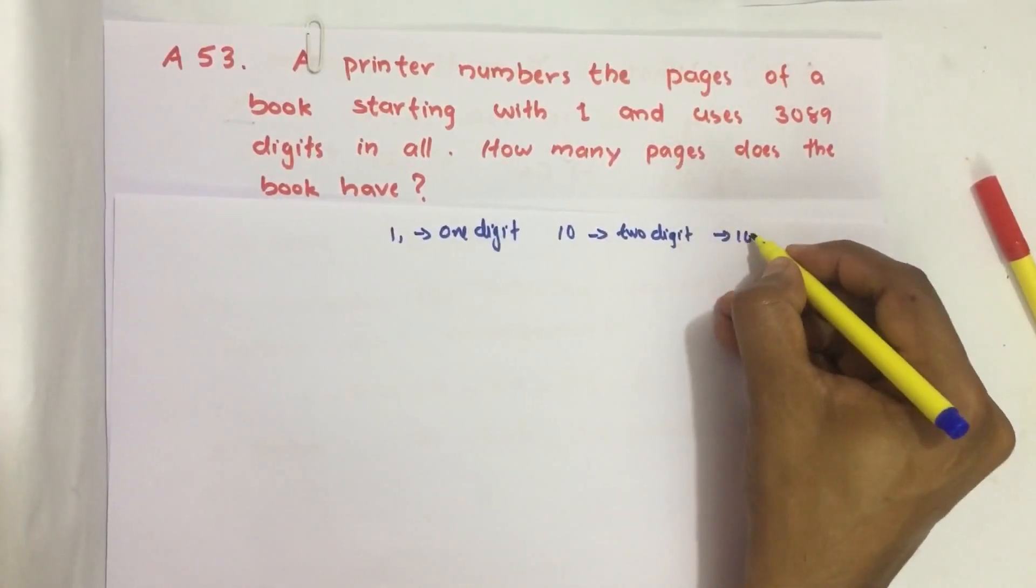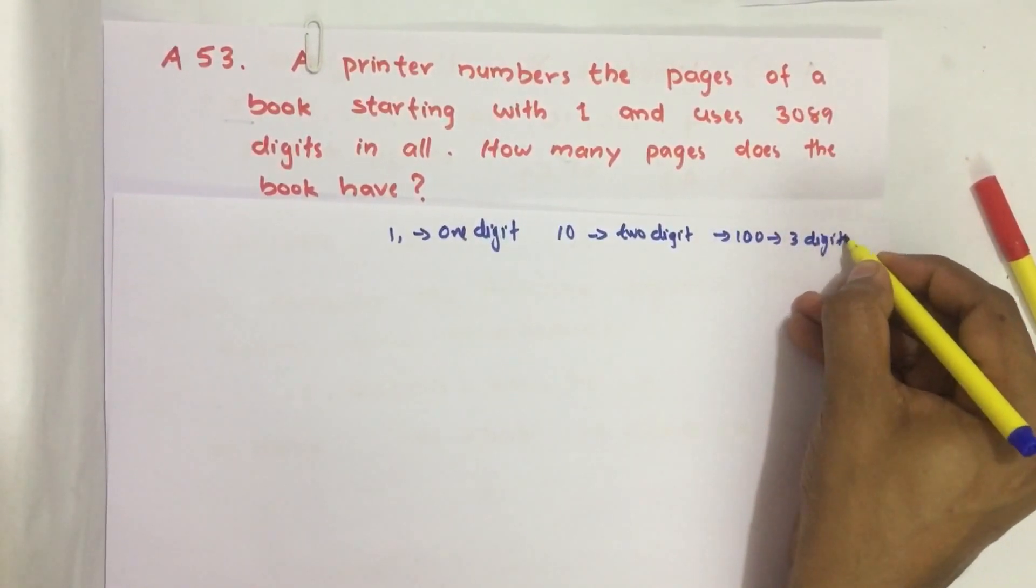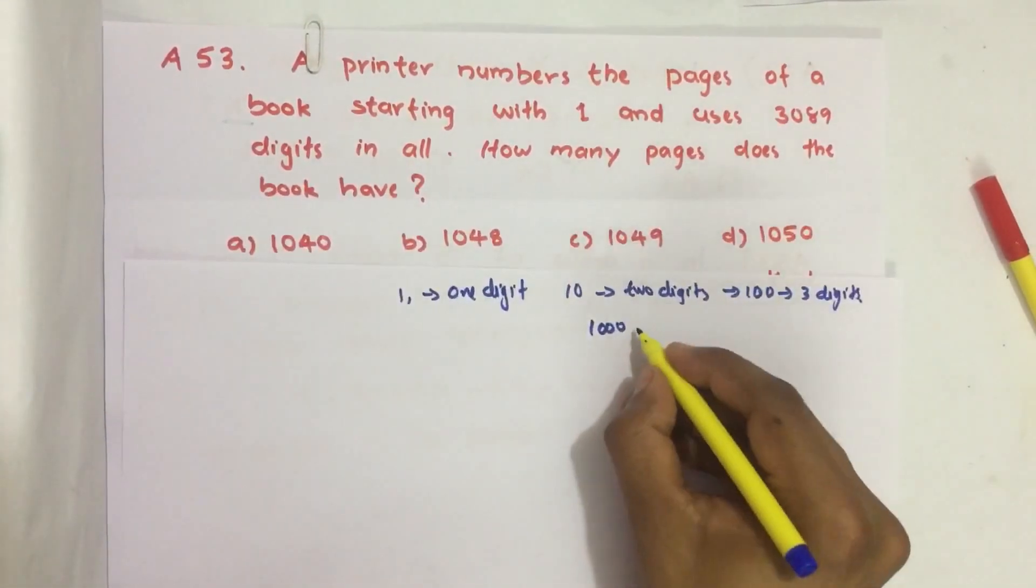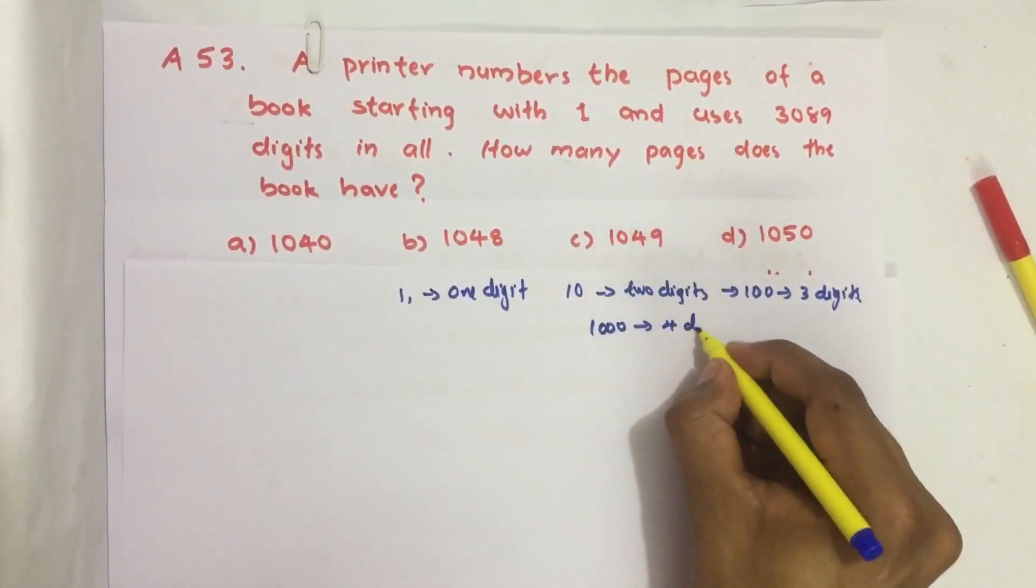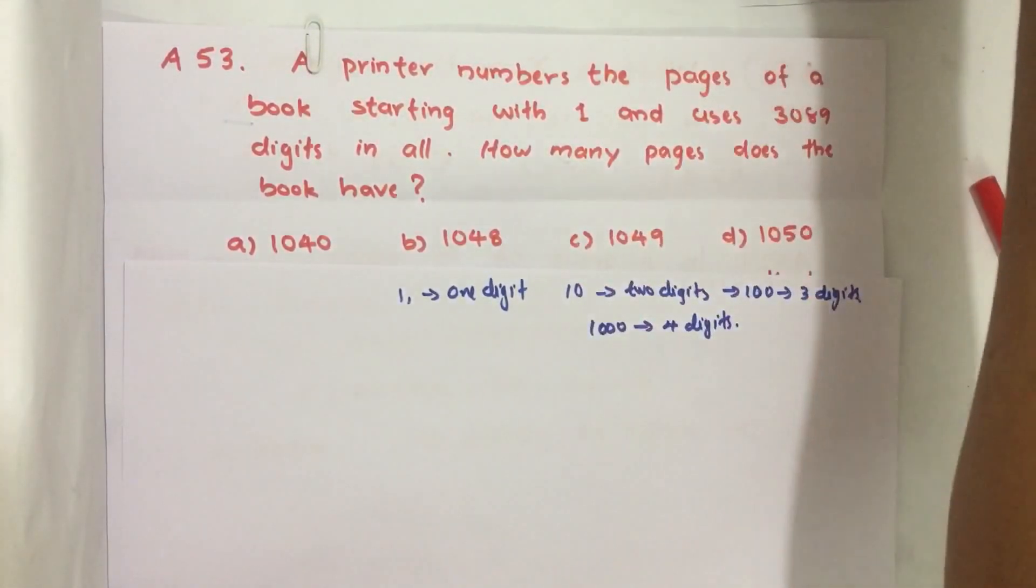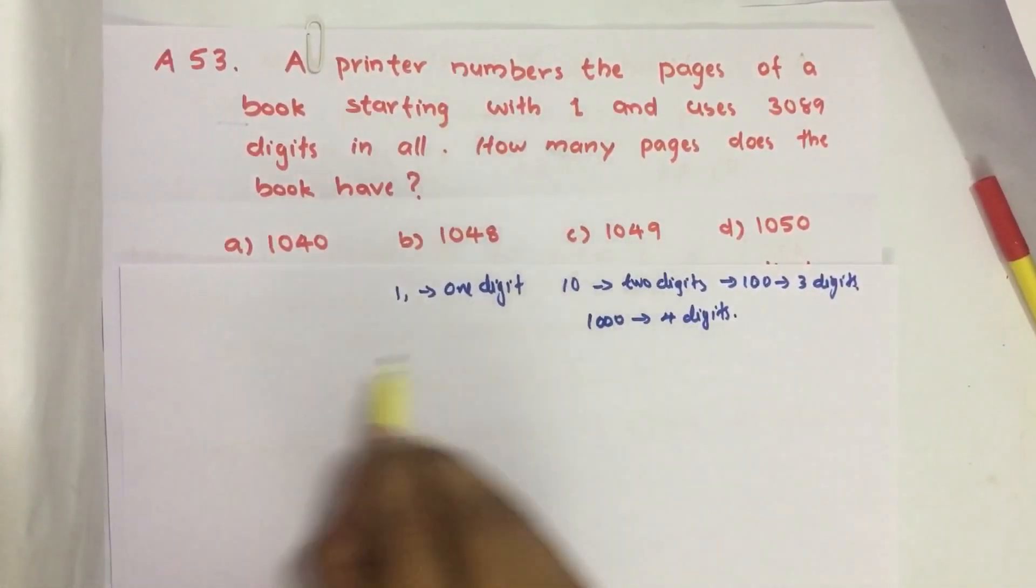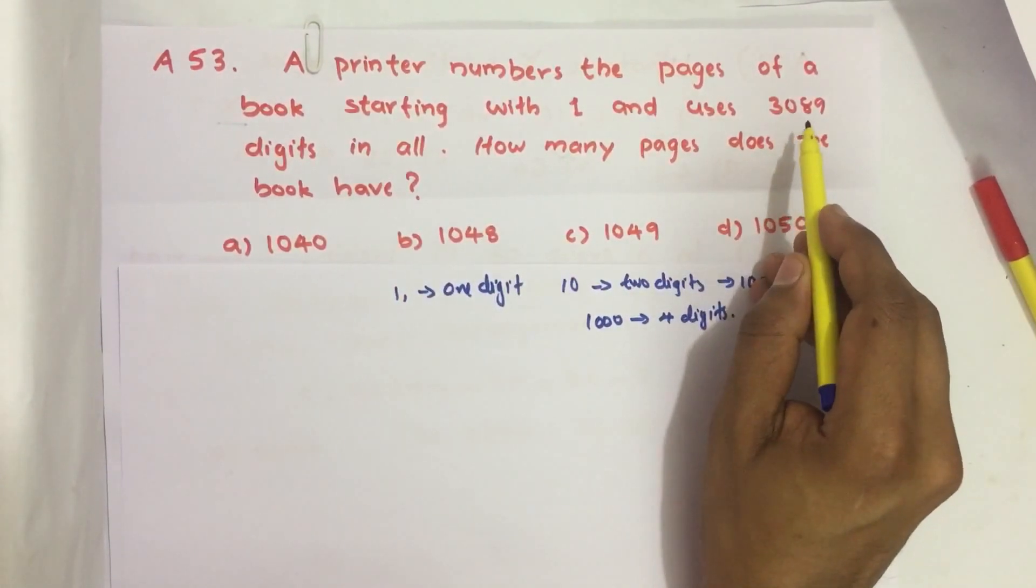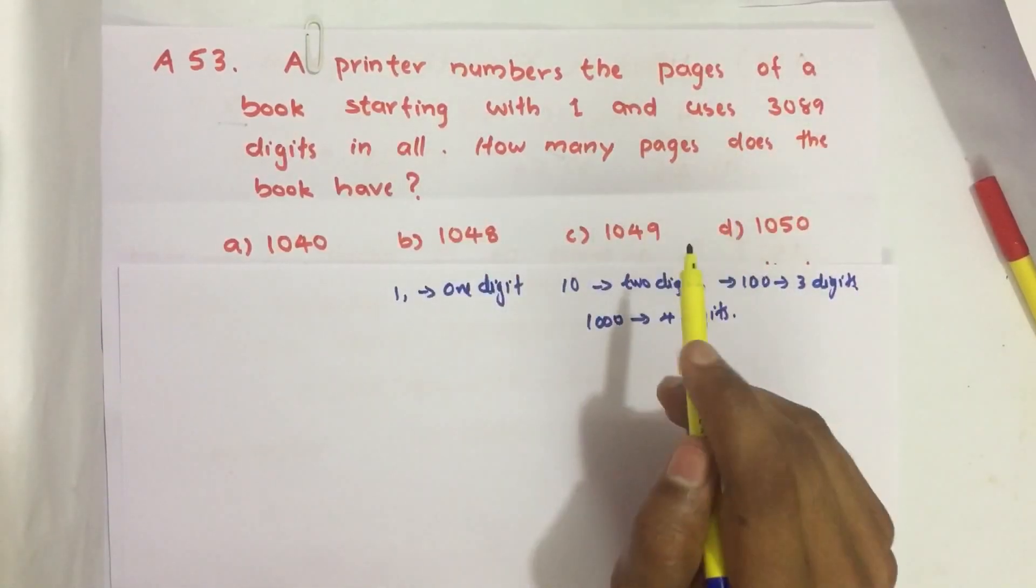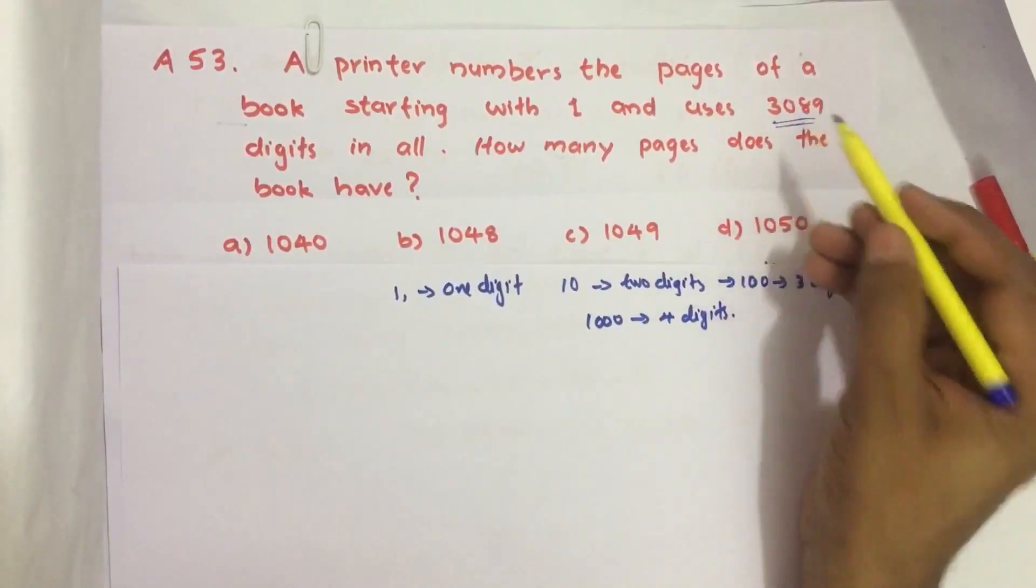Here the printer has used 3089 digits to number all the pages. How many numbers can we print with these 3089 digits? That is what we have to find.